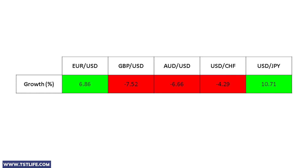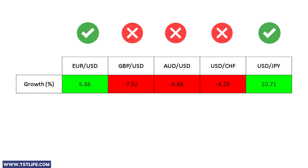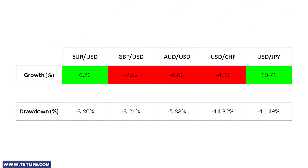These are the results. We can see that the strategy performed well on some of the forex pairs, including the EURUSD and USDJPY. We recorded a growth of 6.68% and 10.71% respectively. So if we trade these two pairs simultaneously, we might make up to 17% growth, which is impressive. However, the drawdown is extremely high on the USDJPY — 11.49% is a major red flag.